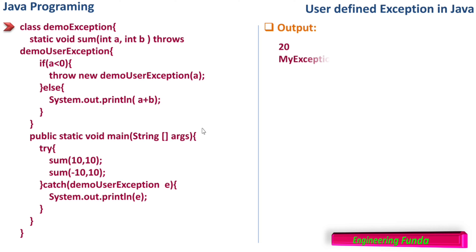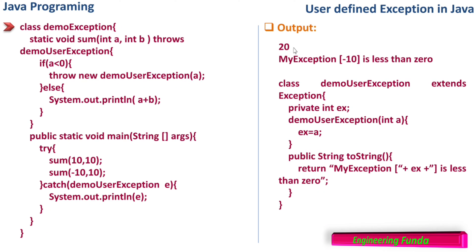The output of this program is: the first line prints 20 and the second line prints 'My exception: -10 is less than zero.' Let us see how it happens. For sum(10, 10), a is 10 and b is 10; it goes into the sum method, checks if a is less than zero — no, a is not less than zero — so it goes to the else part and prints a + b, which is 10 + 10 = 20, and hence 20 is printed.